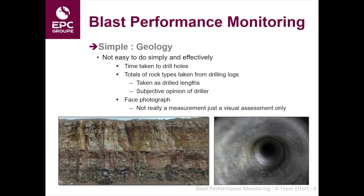Geology is not easy to assess simply and effectively. We can look at the drilling — for example, very simply look at the time it takes to drill a hole, so how many metres per minute of drill hole are being generated on a particular blast. You can take rock types from drill logs, though that's reasonably subjective and depends upon the driller. I've shown an example below where you take a face photograph. You can see in the photograph on the left a very prominent joint across the face — you would imagine that's going to have an impact on the blast. I'll show you a high-speed video later showing the effect of that joint on that particular face.